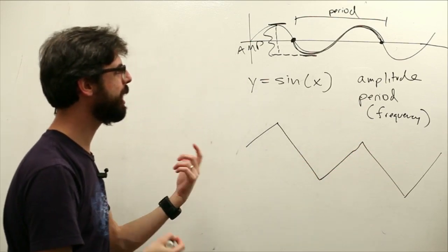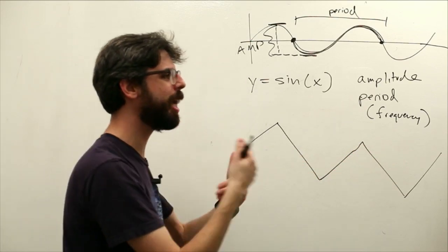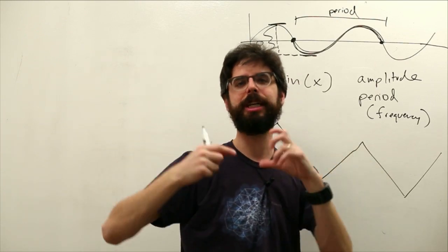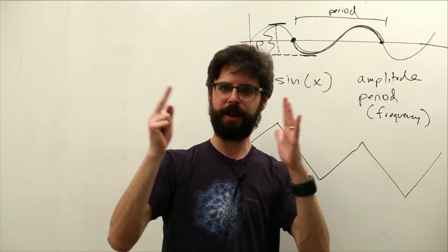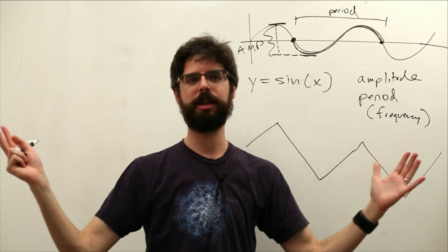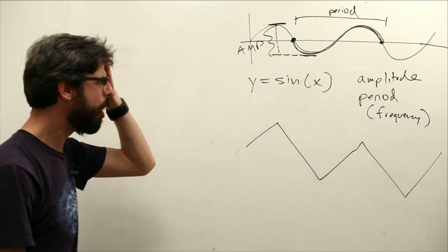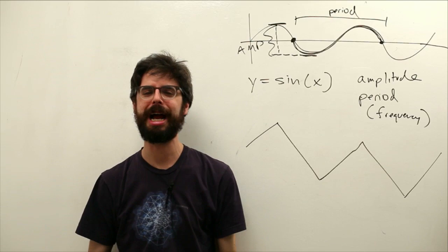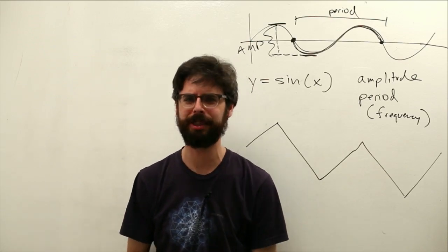And frequency by the way is just the inverse of period is how many cycles in one unit of time. So this is a very high frequency and this is a very low frequency. So that's all kind of in the abstract. But how does this map to a processing sketch?